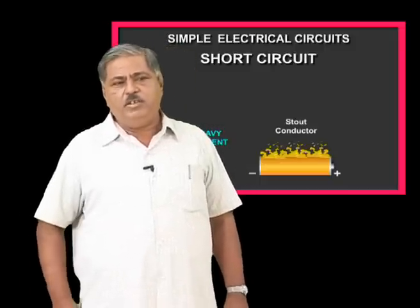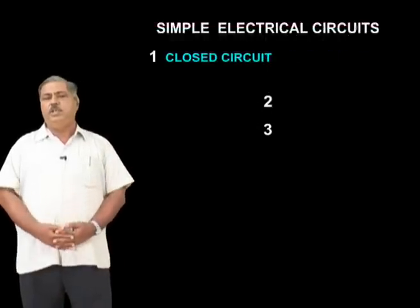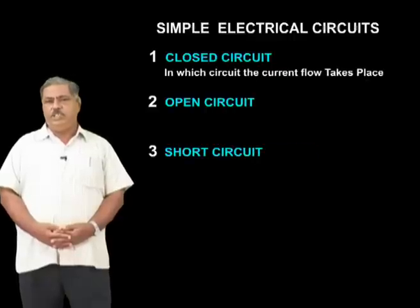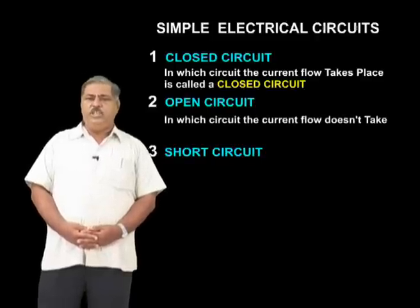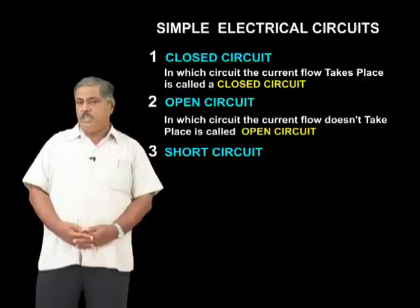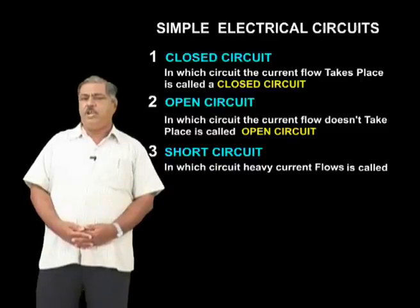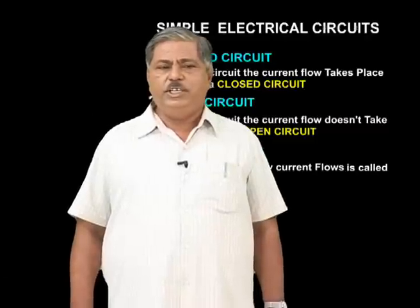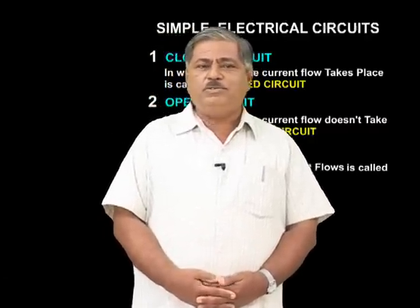We have looked at three different circuits: one is Closed Circuit, two is Open Circuit, and three is Short Circuit. If current flows safely, it is a closed circuit. If there is no current flow, it is an open circuit. If it causes fire accidents, it is a short circuit. Next class, we are going to talk about Ohm's Law.